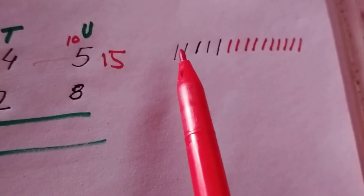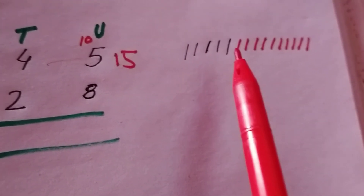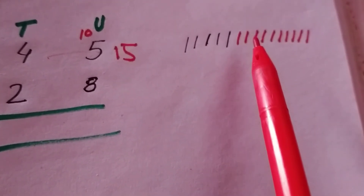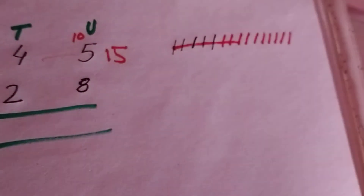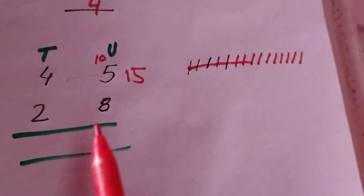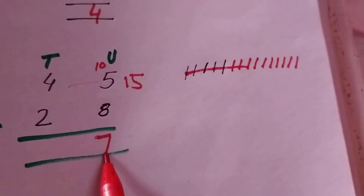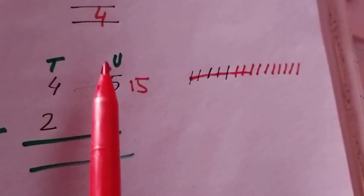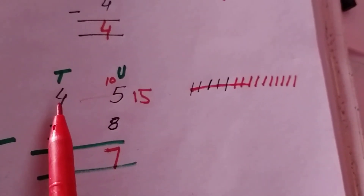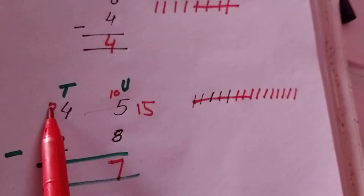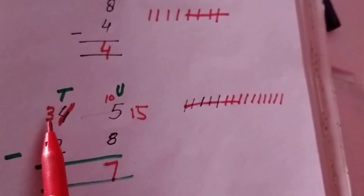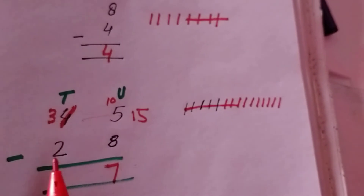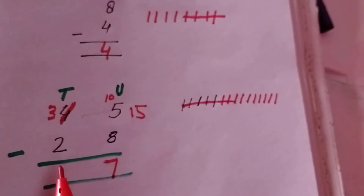We count: one, two, three, four, five, six, seven, eight. The remaining lines are seven. The answer is seven. But four gave us ten, so it is no longer four — the remaining is three. Three subtract two. The answer is one.